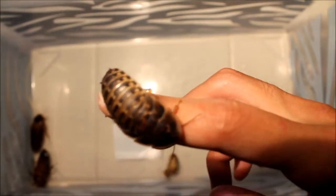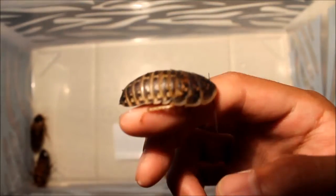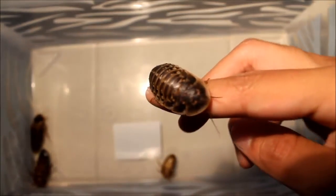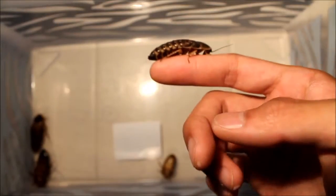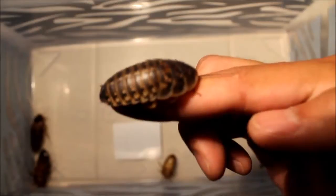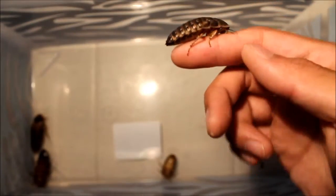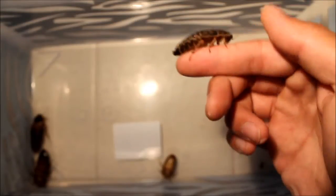This is a little bigger nymph. Looks like he's probably going to shed pretty soon. They actually shed and molt as they get older or get bigger. You can see he's like a brown dull color too. He's not really shiny or anything. He's probably a couple molts away from being an adult.